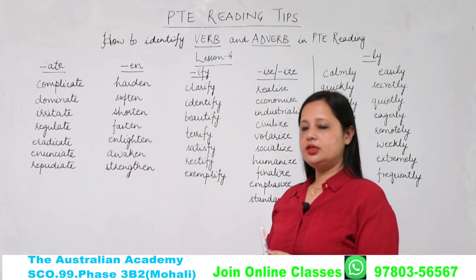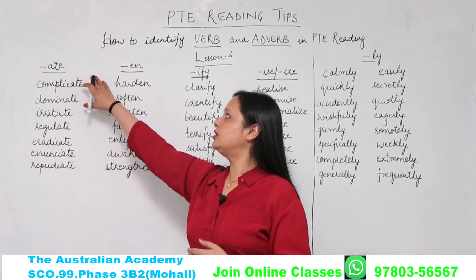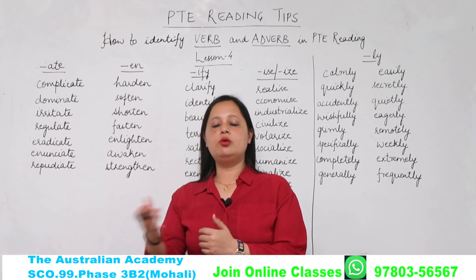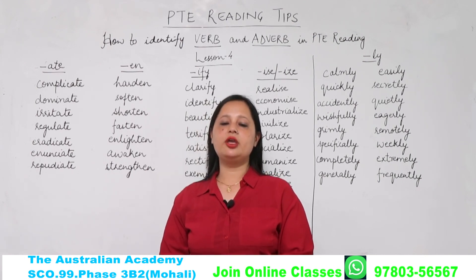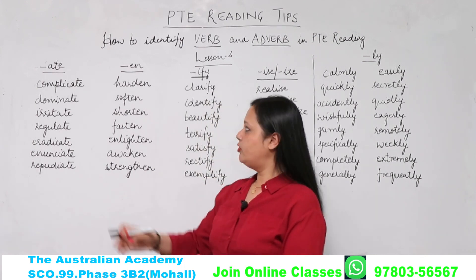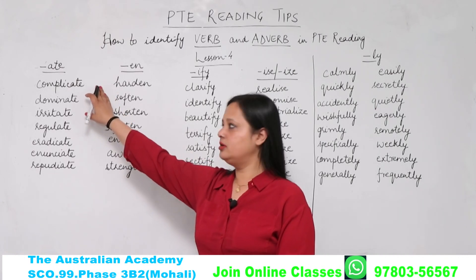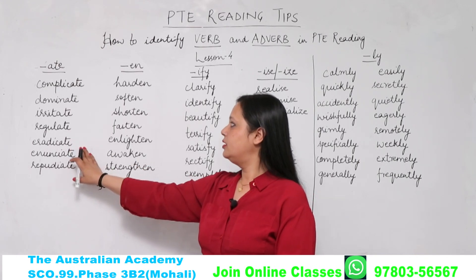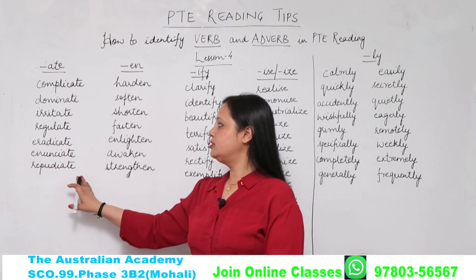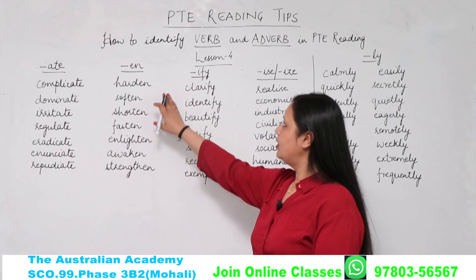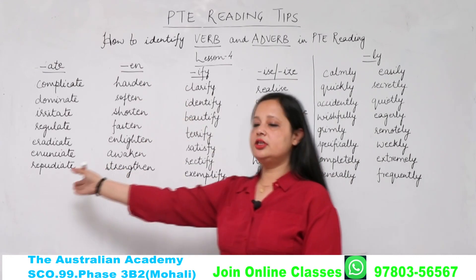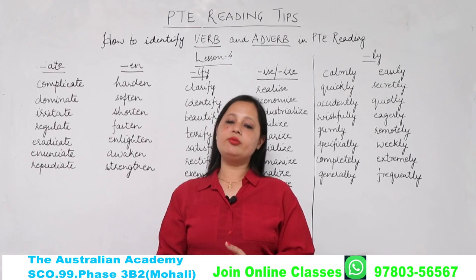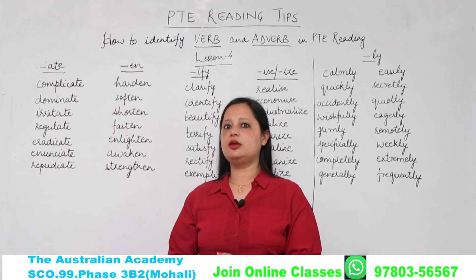So for verbs, the first suffix to understand is '-ate' (A-T-E). Jis word ke last me '-ate' laga hua hoga, wo sare ke sare words verb hi honge. For example: complicate, dominate, irritate, regulate, eradicate, enunciate, repudiate. Ye sare ke sare verb hain. And when we make the second or third form of these verbs, a 'D' is added at the end.